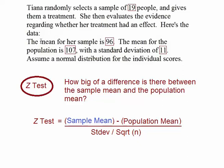In this problem, we have the mean for a sample is 96. So that goes here for sample mean. The mean for the population is 107. That goes over here for population mean with the standard deviation of 11. That goes over here for standard deviation. And it's going to be divided by square root of sample size. And we're told Tiana randomly selects a sample of 19 people. So 19 people goes here.